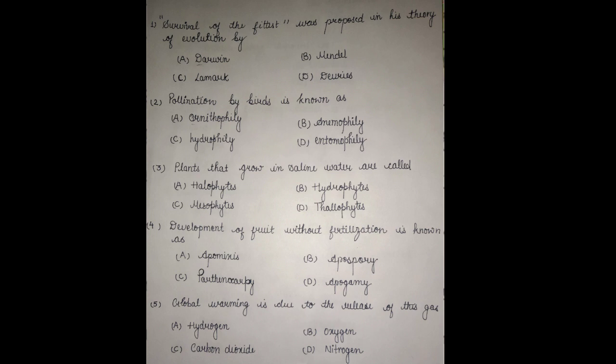The second question: pollination by birds is known as — Option A: ornithophilae, Option B: anemophilae, Option C: hydrophilae, and Option D: entomophilae. The answer is ornithophilae. Anemophilae means pollination by air.